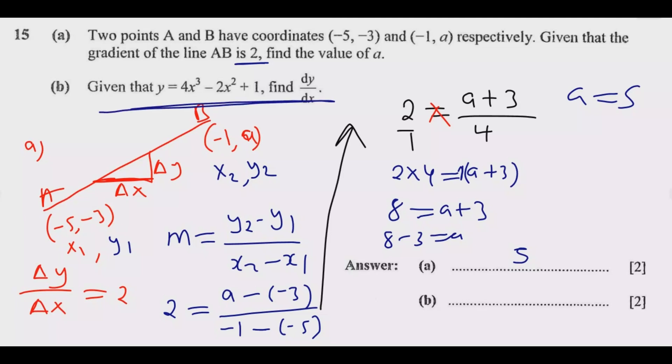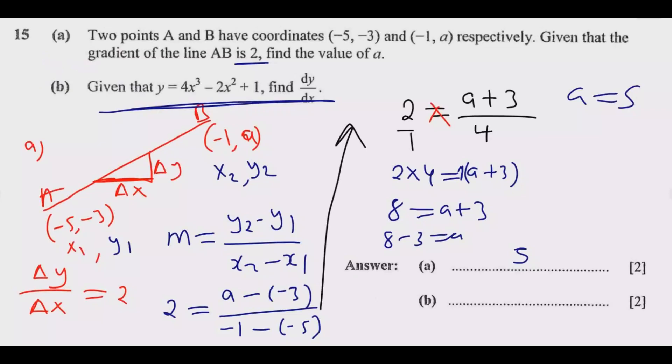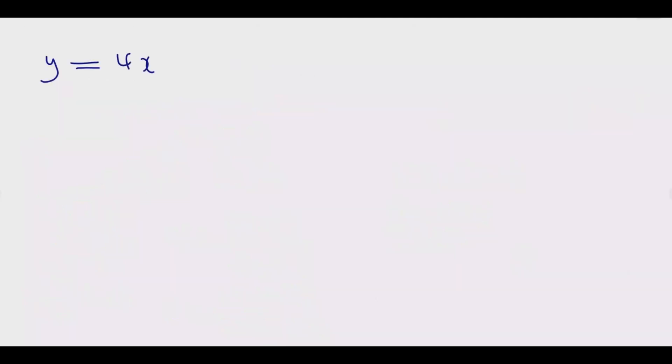Part (b) is asking us to find the differentiation, which is dy/dx. So to answer this question, let me move to a new space. We have y = 4x³ - 2x² + 1. We need to differentiate dy/dx. To answer this question, we use this principle: if you have a function y = ax^n, then dy/dx = a·n·x^(n-1).